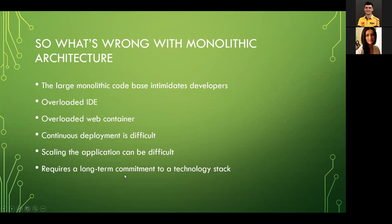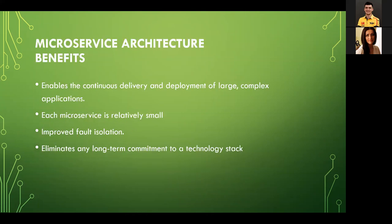The last monolith drawback: it requires long-term commitment to a technology stack. Old, big applications rarely change their technologies. As technologies evolve and become old, nobody wants to work with them, nobody wants to support them, developers don't want to join such projects, and everybody is sad. Now that we've found out what's wrong with monolithic architecture — what's good about microservices?